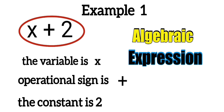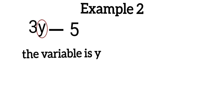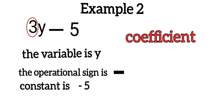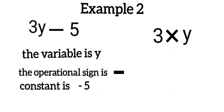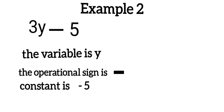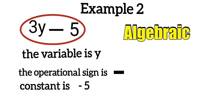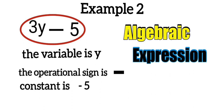Example two: 3y minus 5. The variable is y, the operational sign is subtraction, and the constant is negative 5. The number 3 attached to the variable y is called the coefficient — it means 3 is multiplying y. So there is also a multiplication sign implied. Take note: if there is no sign between a number and a variable, the implied sign is multiplication. Example two is therefore an algebraic expression.